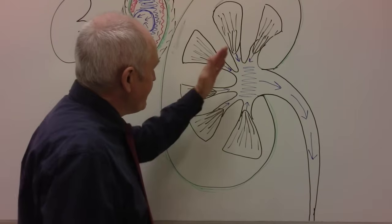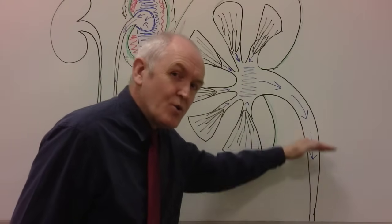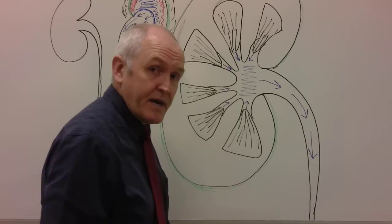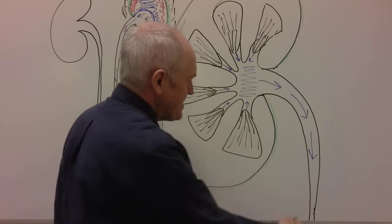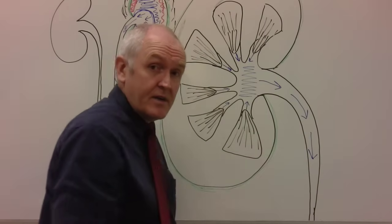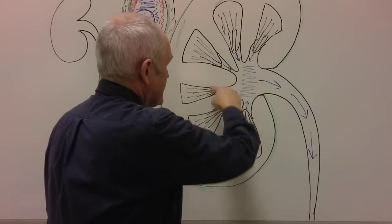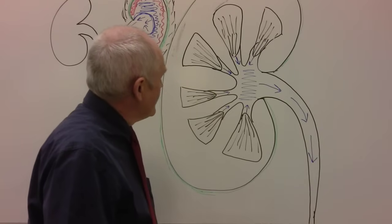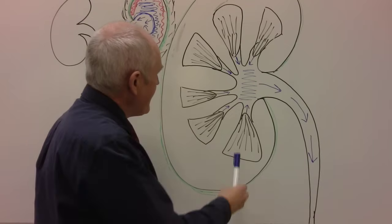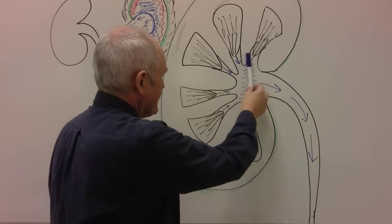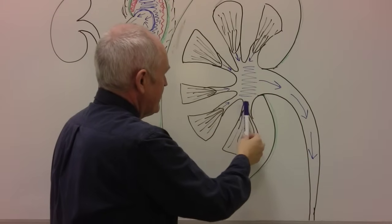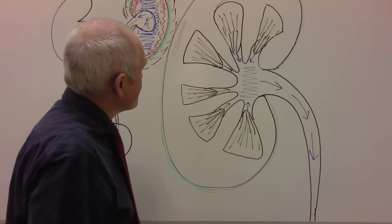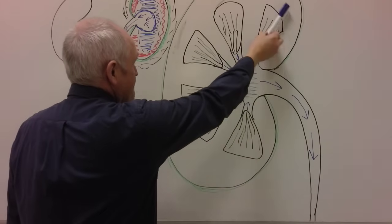Urine is supposed to flow down and out, which washes bacteria away — this area should be sterile with no bacteria. But occasionally bacteria from an ascending infection can get up the ureters and colonize the calyces and the pelvis. That would be a pathological infection, and when that happens it's called pyelitis — inflammation, usually caused by bacterial infection, of the pelvis and calyces.